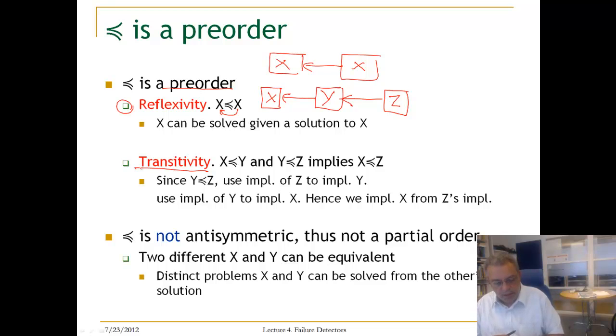It is not anti-symmetric because it is possible to have one abstraction, solution X, that can be used to implement the problem, a solution for the problem Y. And we can also have a solution of a problem Y to implement X. So these are two different algorithms for two different problems.